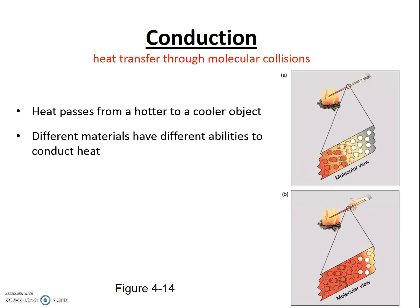Different substances have different abilities to conduct heat. Imagine sitting around a campfire with a metal rod and a long wooden stick in the fire — you'd pick the stick to stir the fire because you know the metal rod will be hot. Why do some substances conduct heat better? Generally, it has to do with how densely their atoms are packed. In densely packed structures like metals, vibrating atoms knock into more adjacent atoms, transferring energy. So in general, solids conduct heat better than liquids, and liquids conduct heat better than gases.